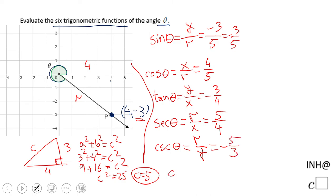And the last one, cotangent, will be the reciprocal of tangent, X over Y. And it's going to be negative 4 thirds.